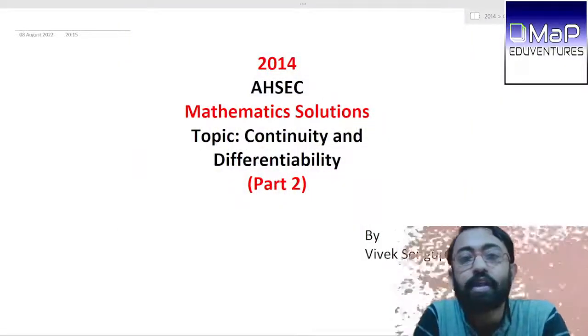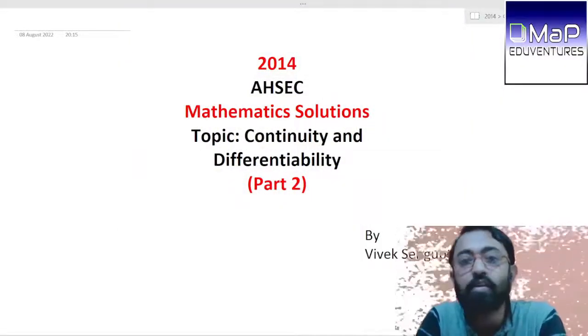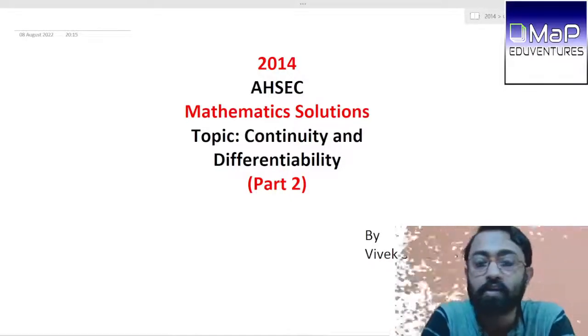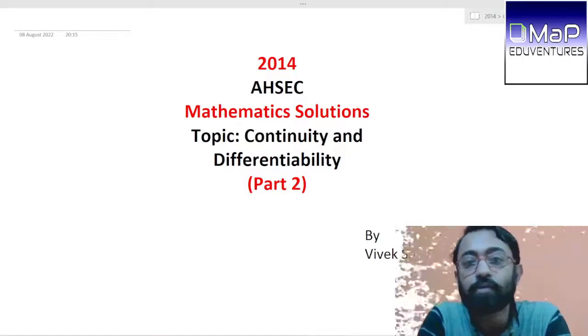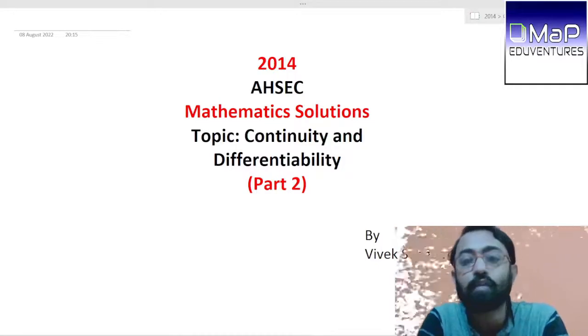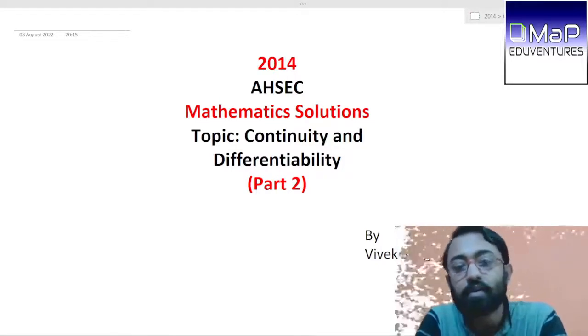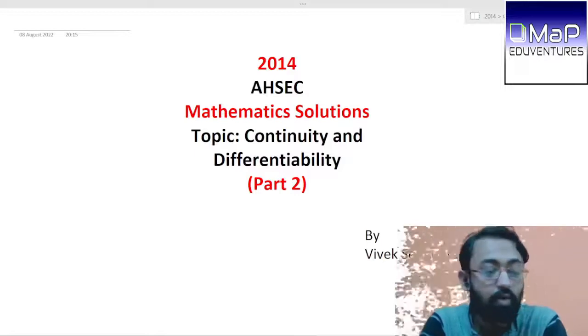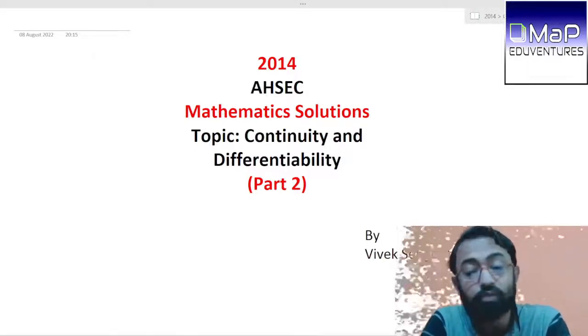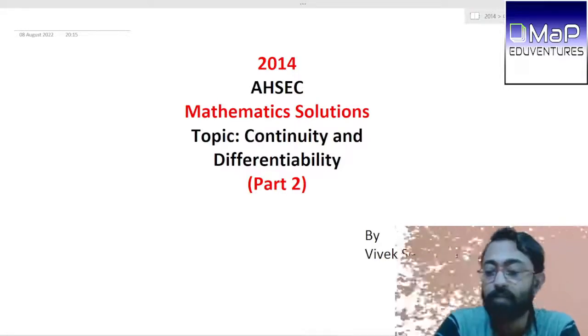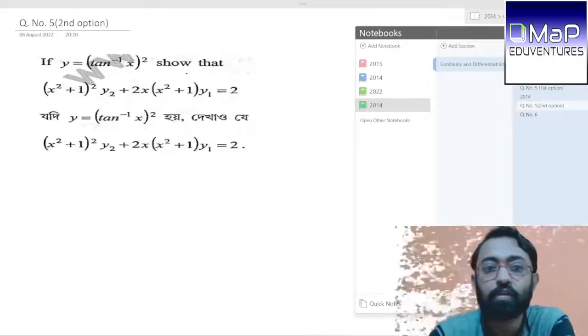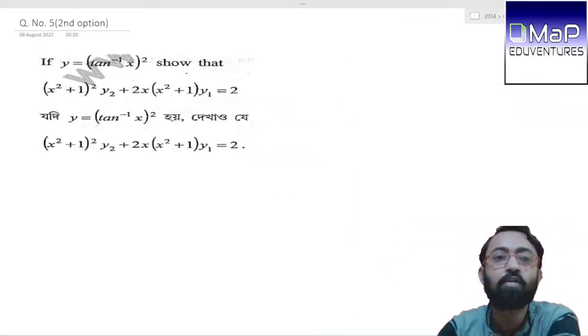Welcome back to the 2014 AHSEC Higher Secondary Mathematics solution on the topic of Continuity and Differentiability, Part 2. In the first part, we discussed question number 1F, 1G, and question number 5 first option. In this video, we'll discuss question 5 second option and question number 6. Please subscribe if you haven't already. Let us go to question number 5, second option.